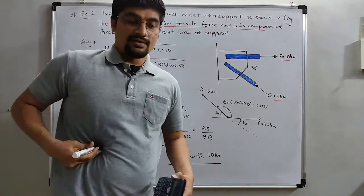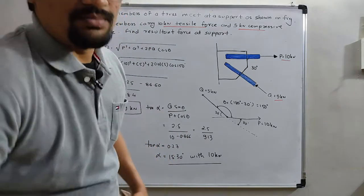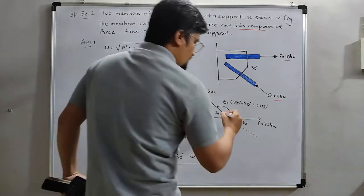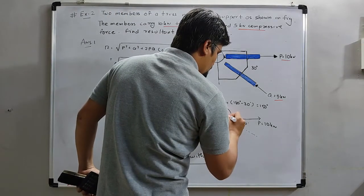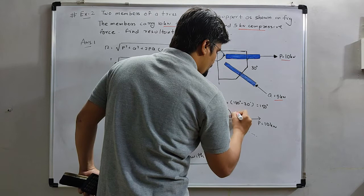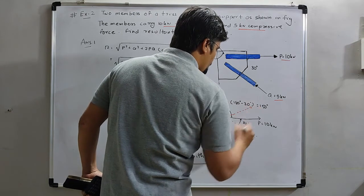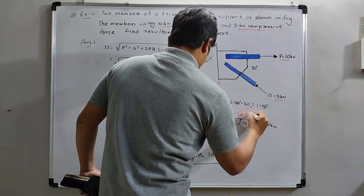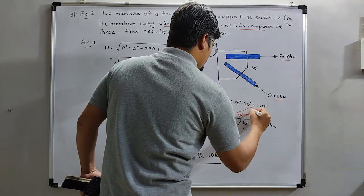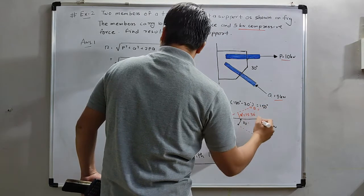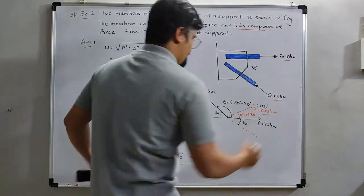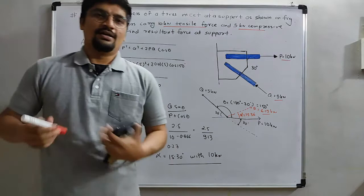The alpha always makes angle with the major force, means with the P value. So our answer will be R will be somewhere here.